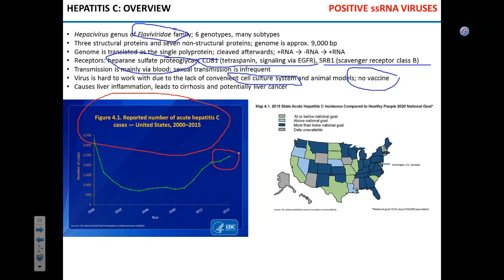Hepatitis C is often presented as being sexually transmitted, but several rigorous studies — including one focused on couples where one partner was hepatitis C positive and the other negative — looked at rates of transmission between partners. They found that sexual transmission is very infrequent. In all hepatitis C cases, it accounts for about 1%.